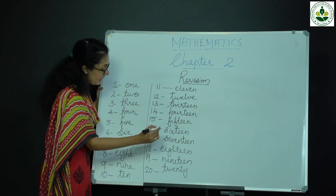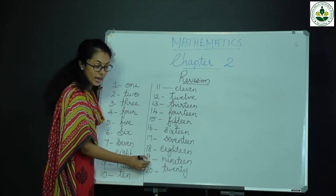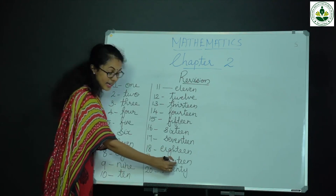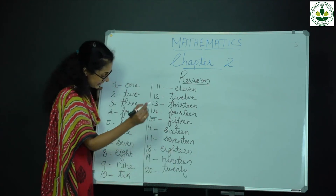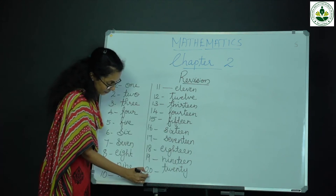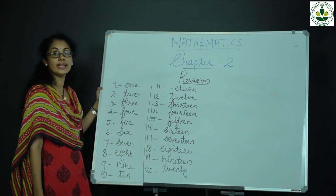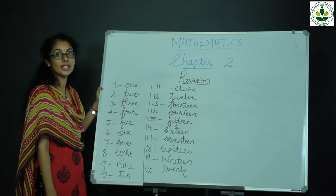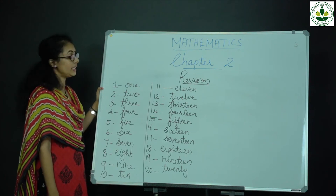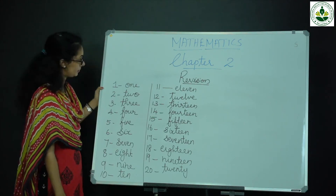18 — EIGHTEEN. 19 — NINETEEN. Then 20 — TWENTY.